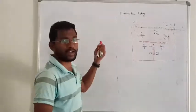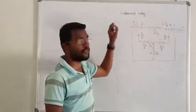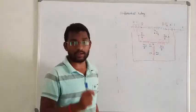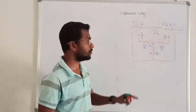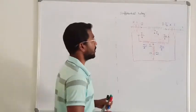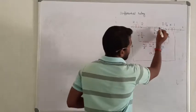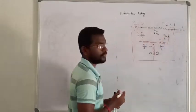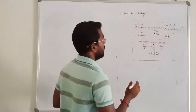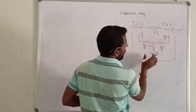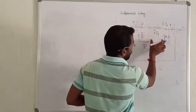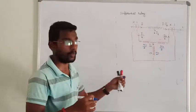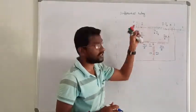Hello guys, so the next one is differential relay. Let us see how it will go in this example question, so you will know how to answer this question. Here is a transmission line, and in the transmission line there is a fault. If we fix the differential relay, we will fix the fault and try to isolate the system with the help of the differential relay.